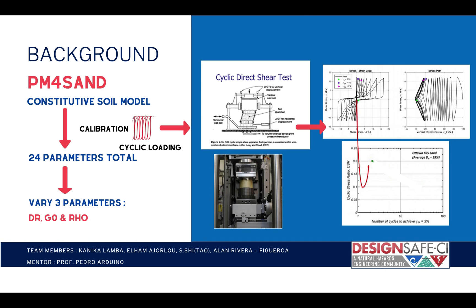PM4Sand has a total of 24 parameters. However, to get a general response, for this hackathon project we are calibrating three main parameters: namely DR, that is relative density of sand; G0, that is shear modulus coefficient; and RH0, which is the contraction rate parameter.